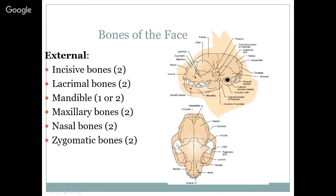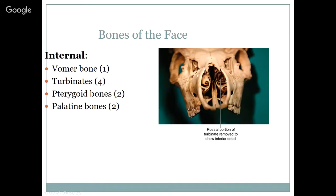Bones of the face: we have the incisive bones with the upper incisors, the lacrimal bones underneath the eyes, the mandible — which can be one or two bones, joined at a symphysis right in the center of the lower jaw — the maxillary bones with the upper cheek teeth, the nasal bones on top of the nose, and the zygomatic bones that surround the eye. We have vomer bones within the nose with turbinates. There are also pterygoid bones and palatine bones inside the skull — these are more difficult to point out when looking at skulls.